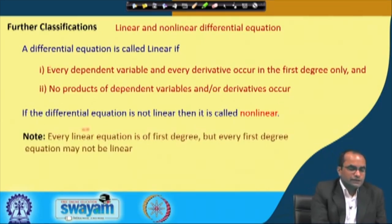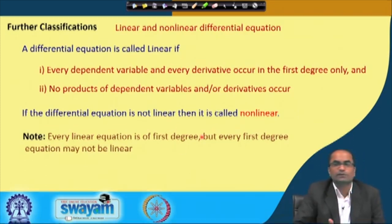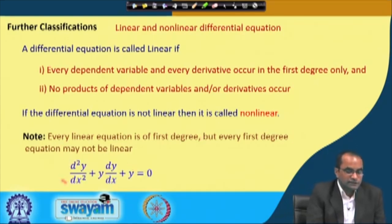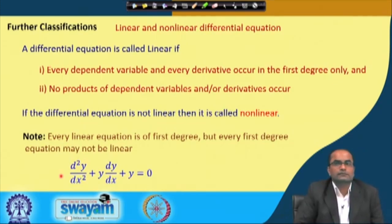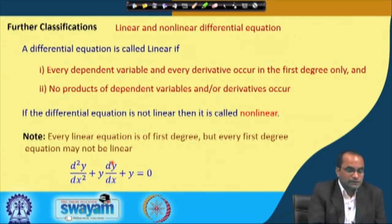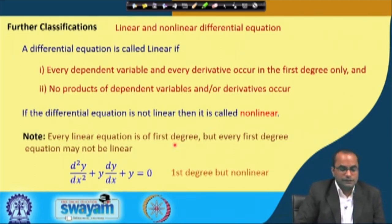Every linear equation is of first degree because in a linear equation there will be no product or power. However, not every first degree equation is linear. For instance, a second-order equation of degree 1 can still be non-linear because of a product of y and dy/dx. So every linear equation is of first degree, but not every first degree equation is linear.